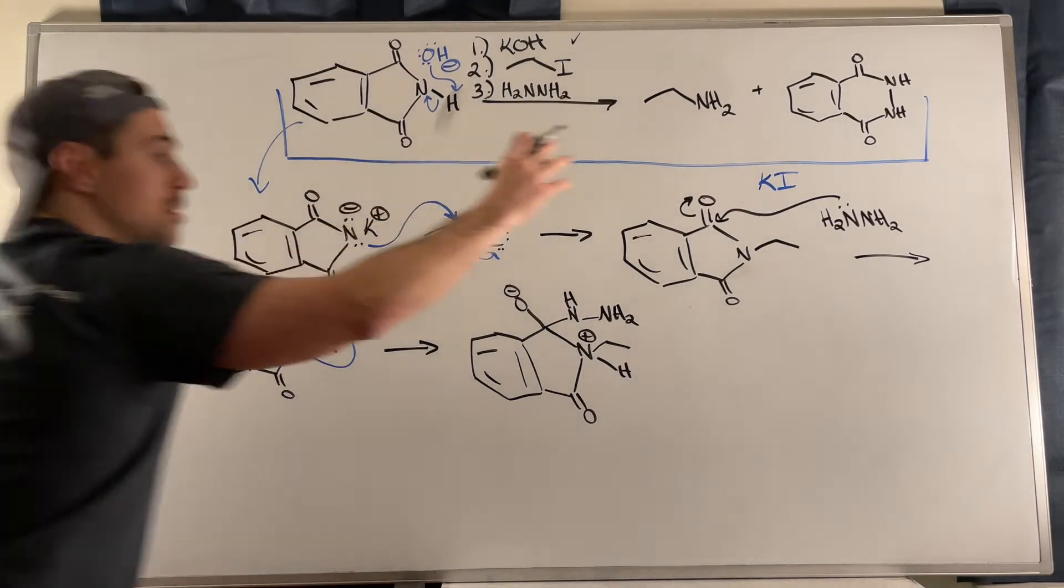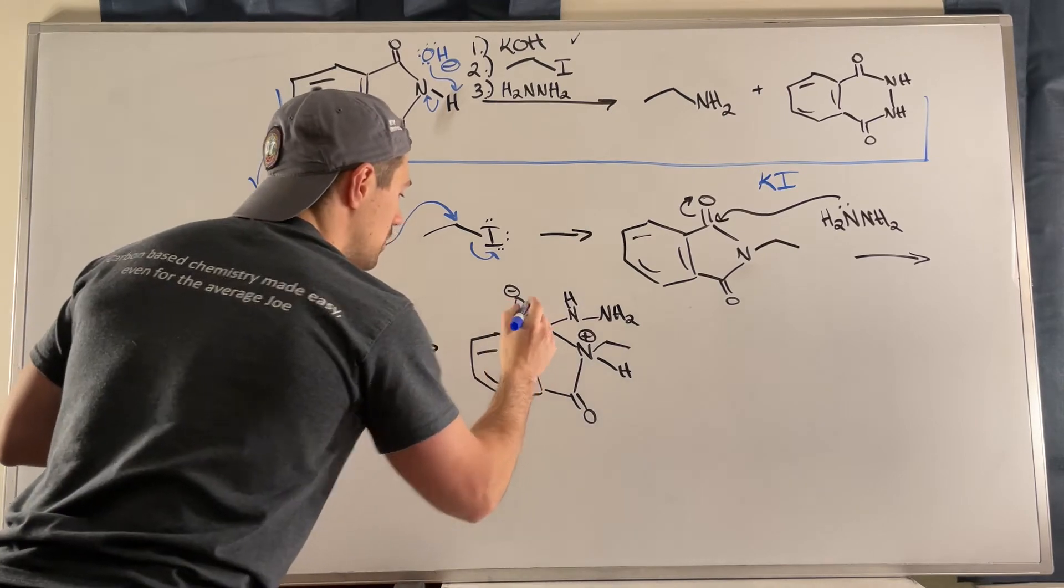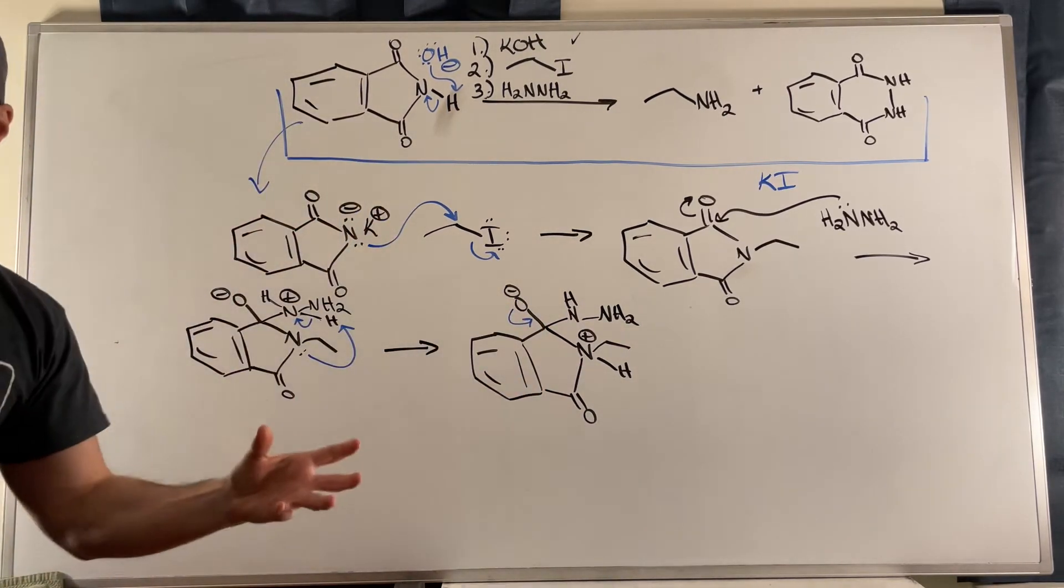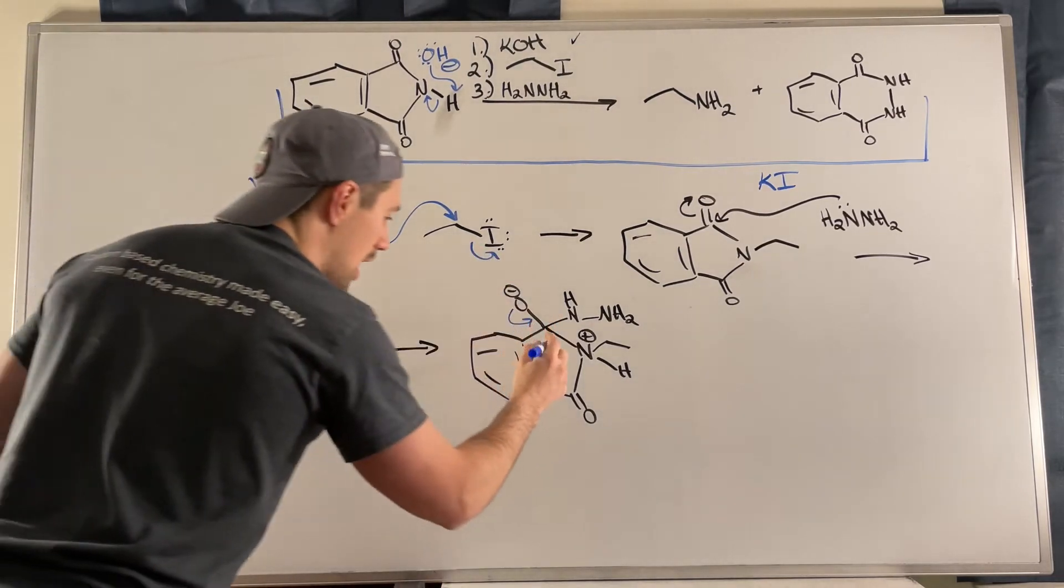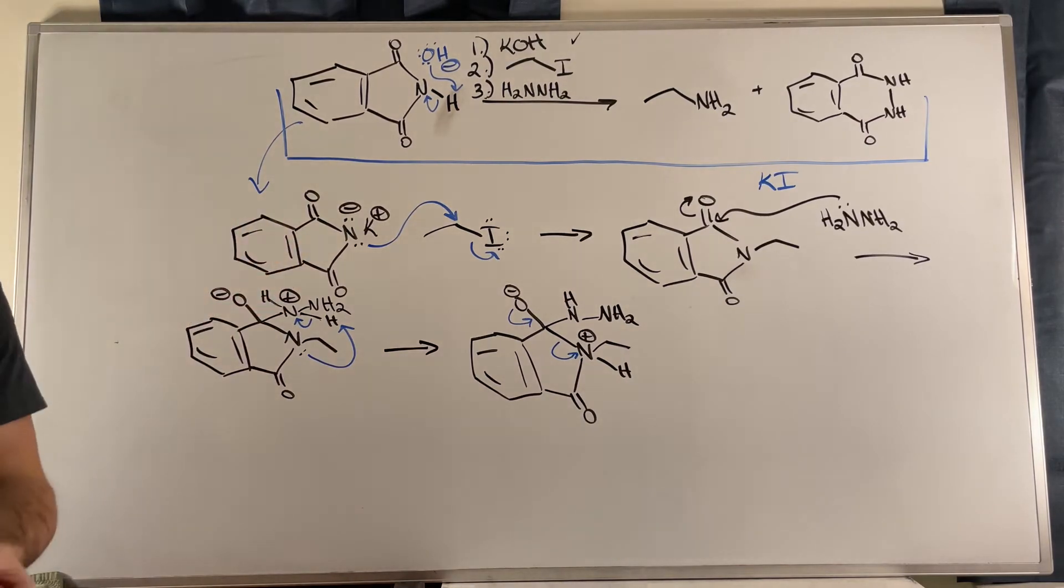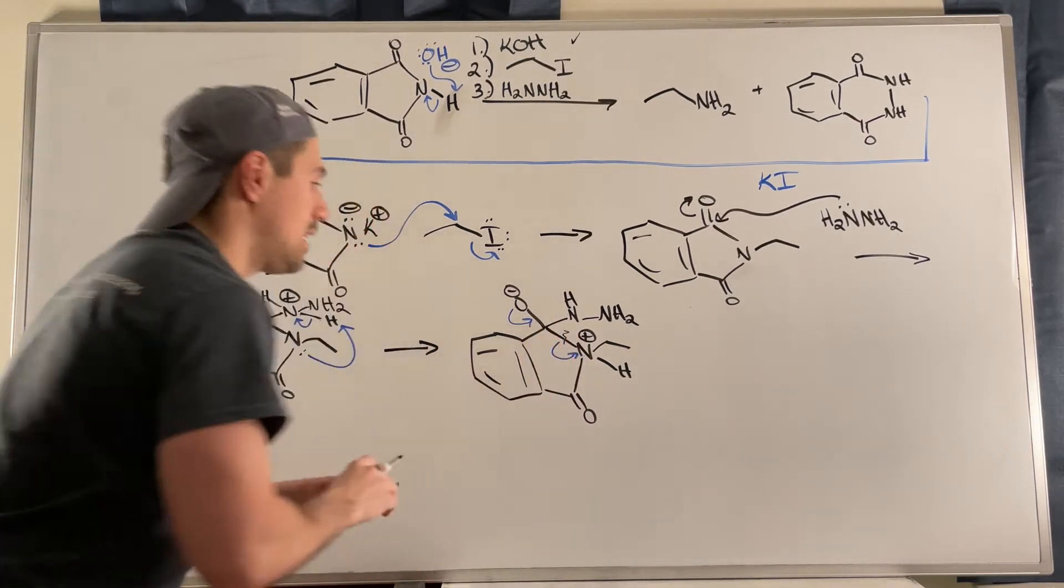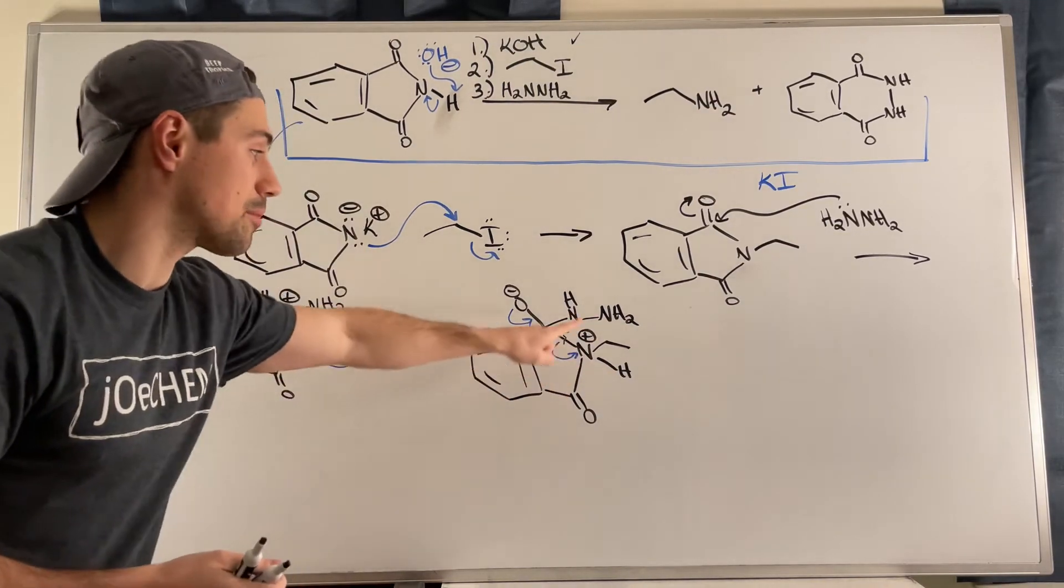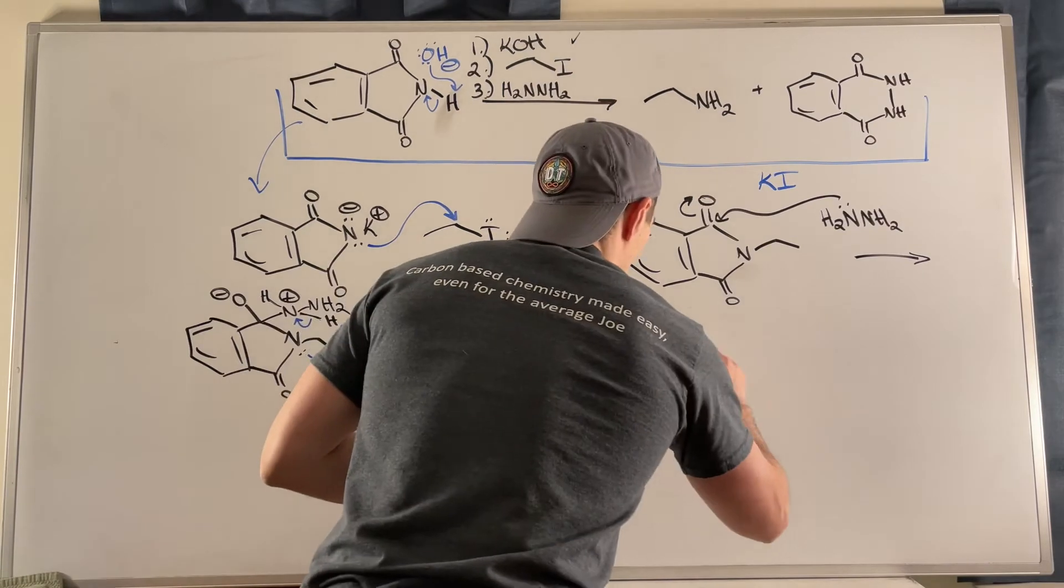Now, so this was the addition part of the addition elimination mechanism. Now we're actually going to eliminate. So I'll swing these electrons down. I'm going to reform that carbonyl carbon, but I need to eject something. I need to get rid of something. And now this is primed in much better as a leaving group to actually take the electrons and run. Okay, so we're really just breaking this bond right here, which is good because that's one step closer to actually kicking this off as a whole. So as a result, what does that look like?